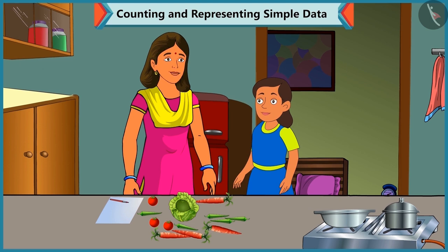Bubbly, I am checking which vegetables are left and how many are left. Mummy, I will also help you. Ok, Bubbly, come on. First of all, we group the vegetables and then we count them and then we write their numbers. Ok, Mummy.